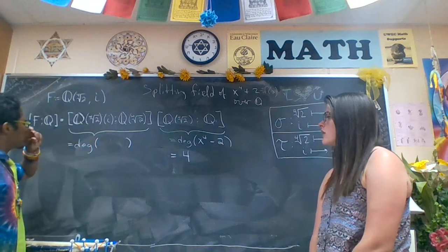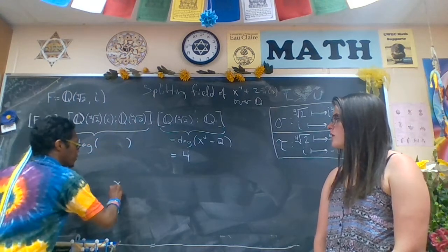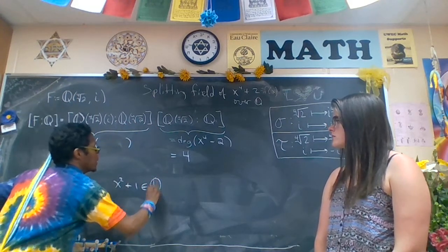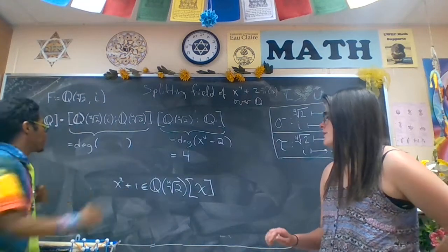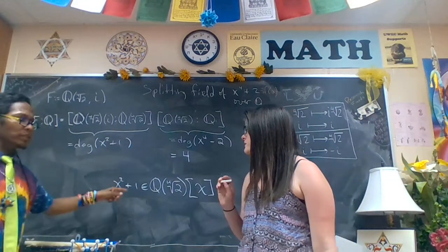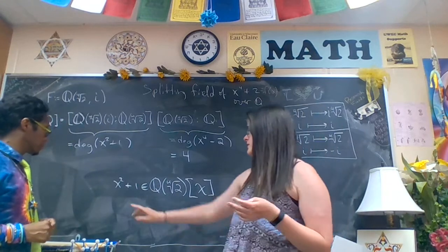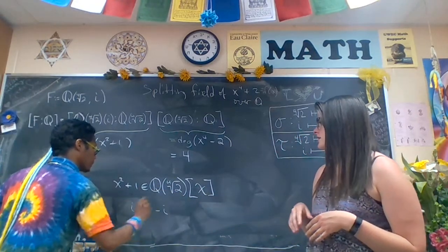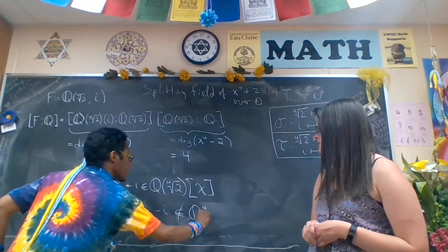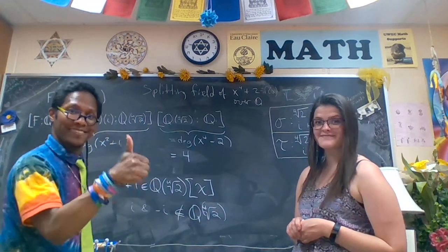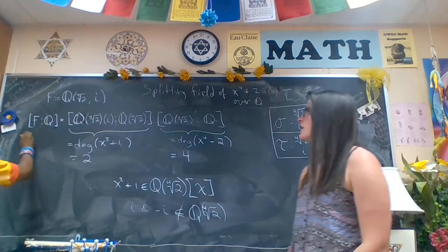And considering this one, we need the minimal polynomial of i over the fourth root of two. And I claim that that polynomial is x squared plus one and lives in here. But before we say that this is the minimal polynomial, why is this irreducible over this field with larger coefficients, Mackenzie? Well, clearly the only roots of this polynomial would be i and negative i, and i and negative i don't live in this here. So this is degree two. So clearly this extension is eight.